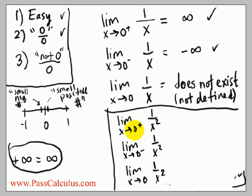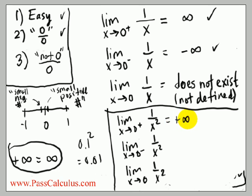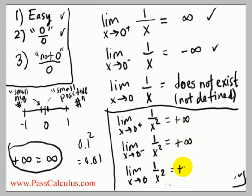If you take a small positive number and square it, you get an even smaller positive number — like 0.1 squared is 0.01. So squaring a small positive number gives a still-small positive number, and one divided by a small positive number is a big positive number — so the right-hand limit is plus infinity. For the left-hand limit: squaring a small negative number makes it positive. So you again get a small positive number, and one divided by that is a big positive number — plus infinity. Both limits are the same, so the two-sided limit is also plus infinity.